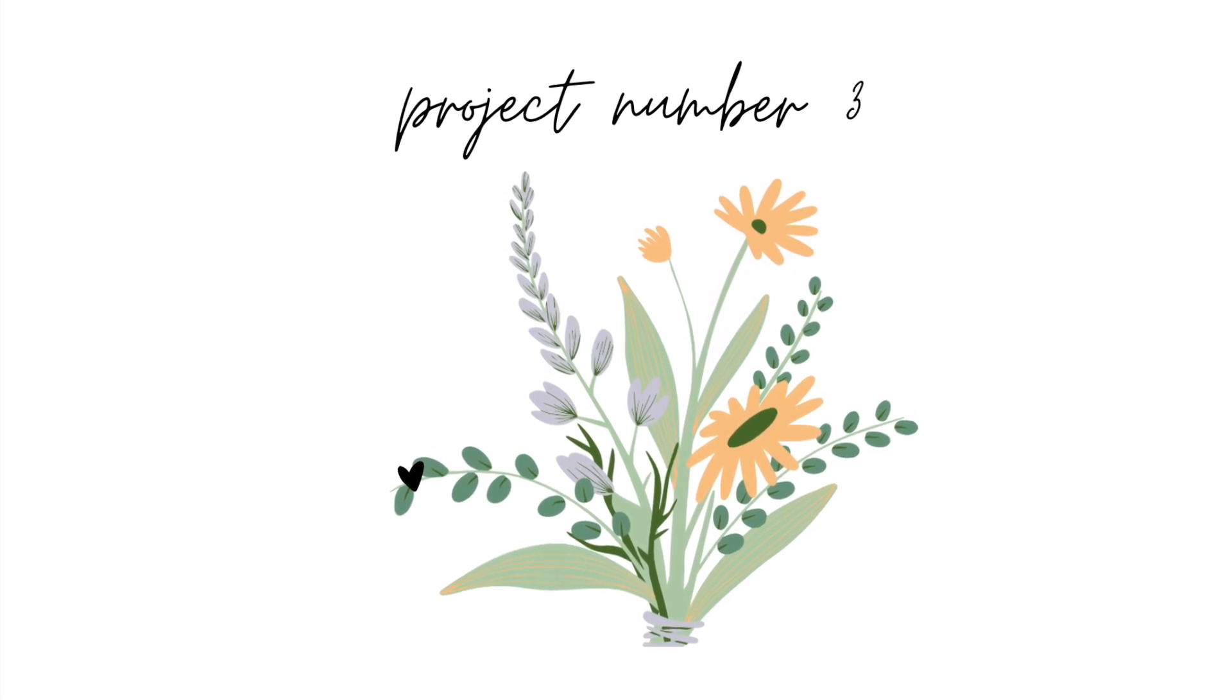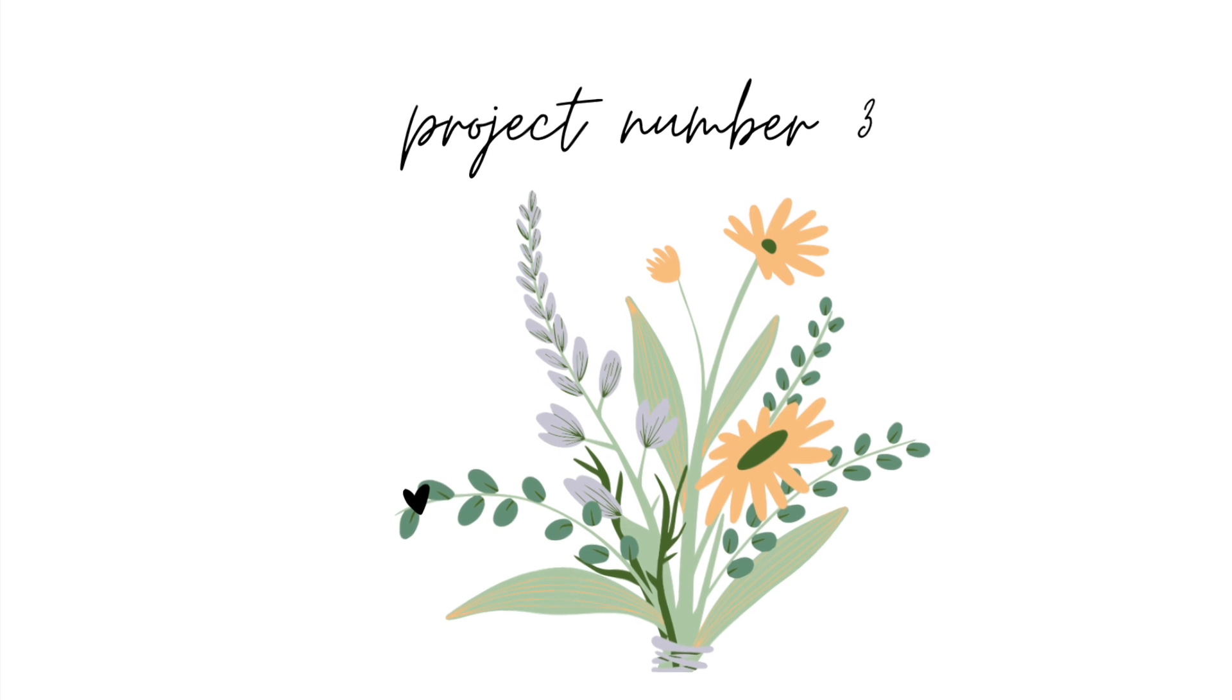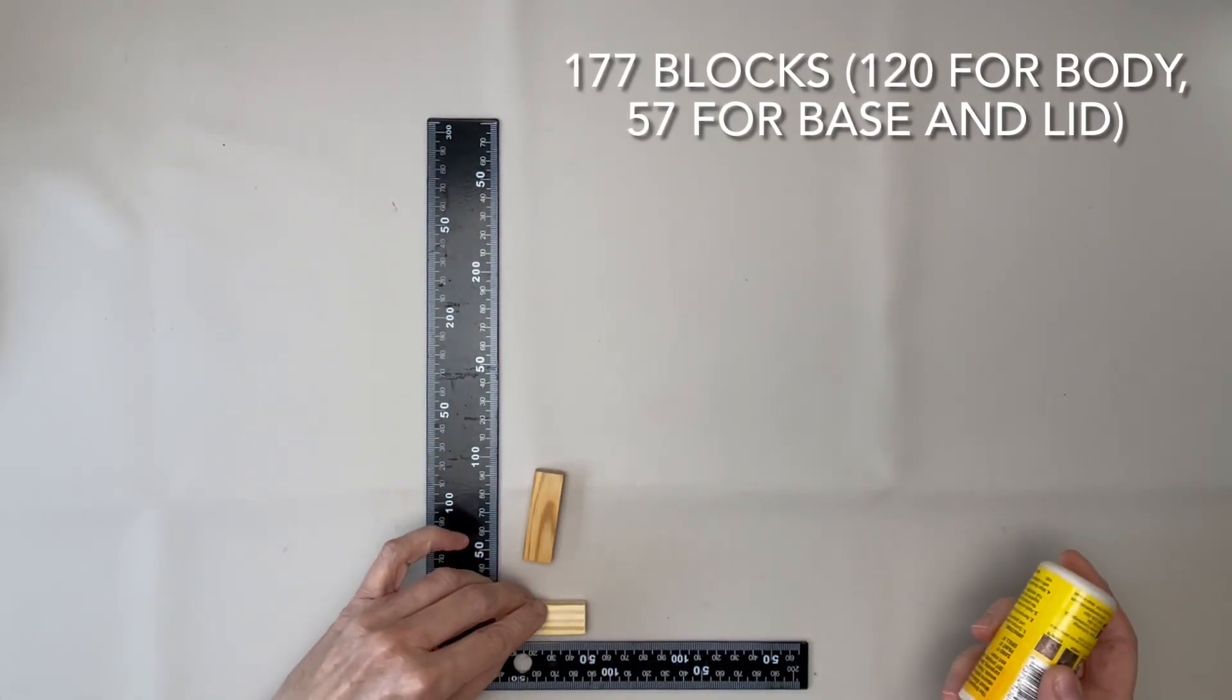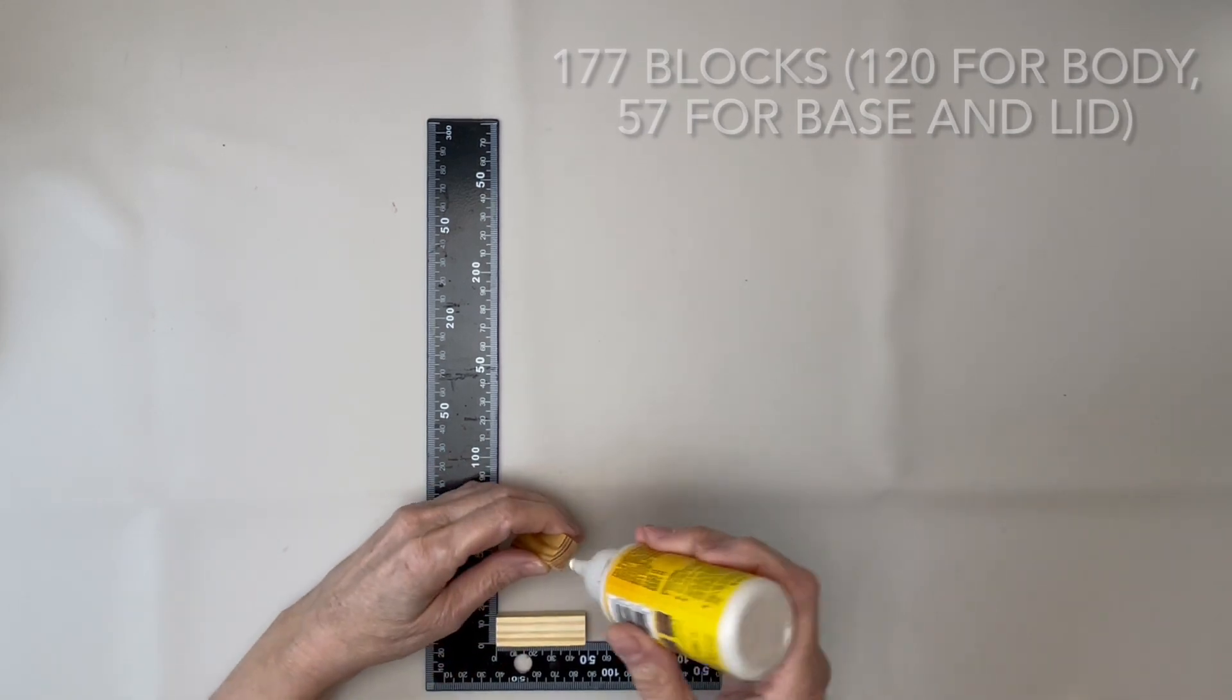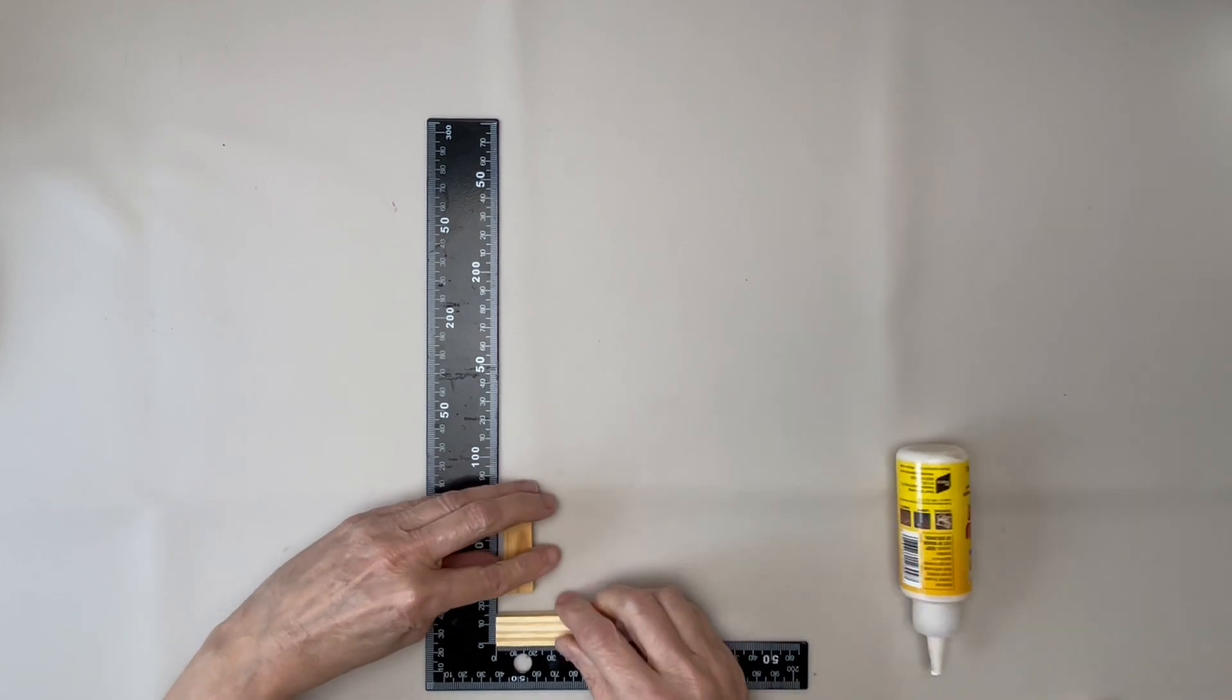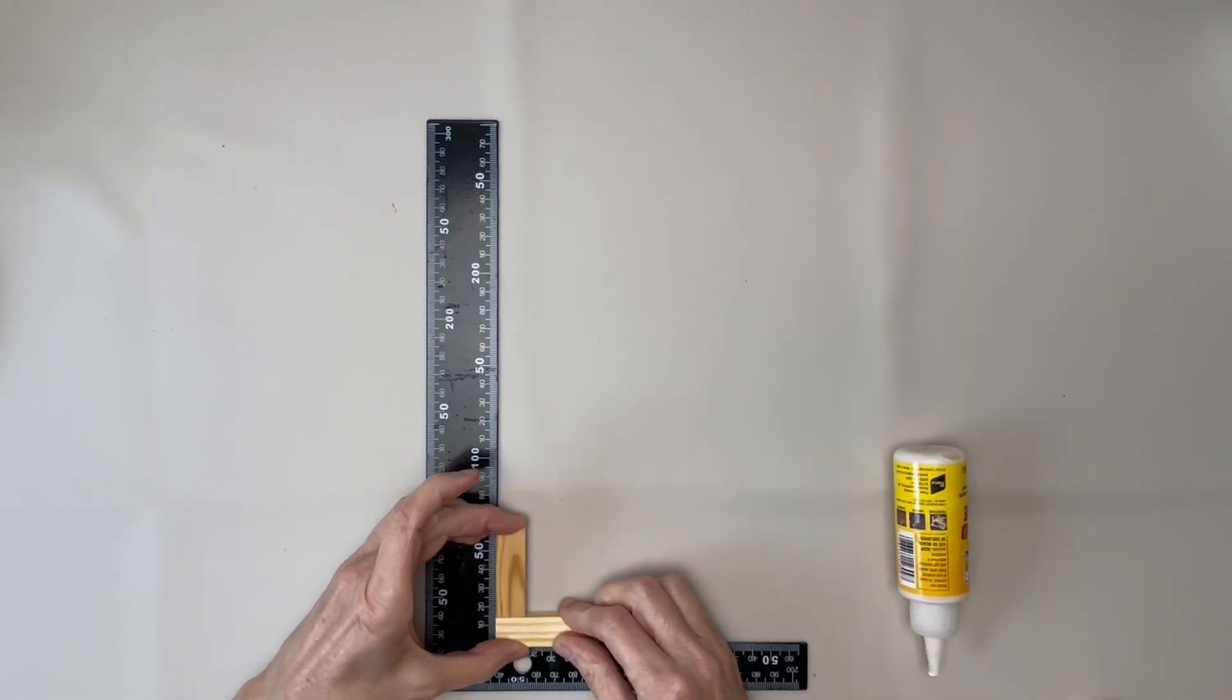Our third project is a lantern requiring 177 blocks. Start by making 30 squares. On this project, I put the squares together by first assembling letter L's and then putting those together later on.